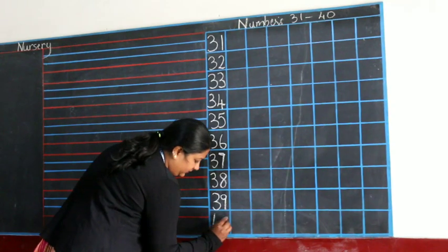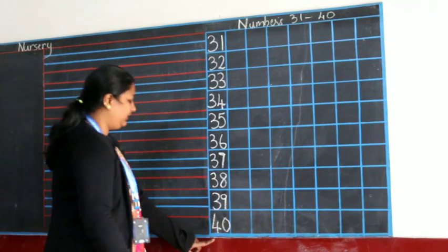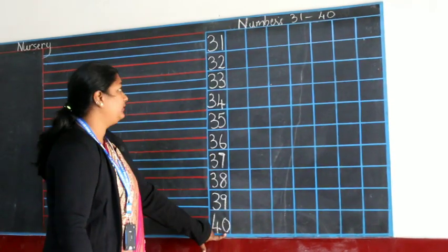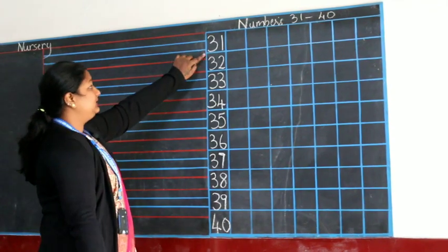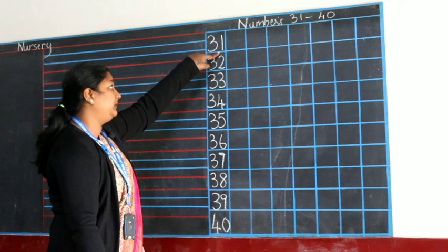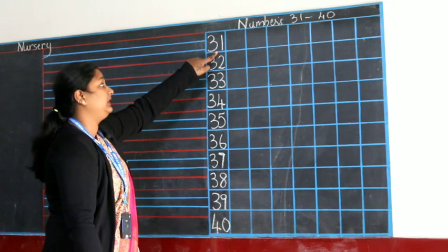4, 0, 40. 4, 0, 40. So, you will repeat after me children. 3, 1, 31. 3, 1, 31.